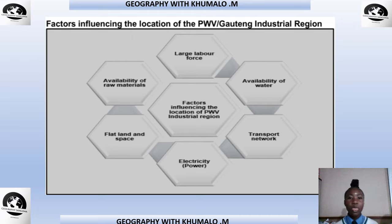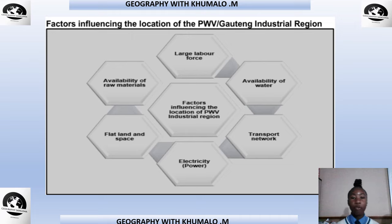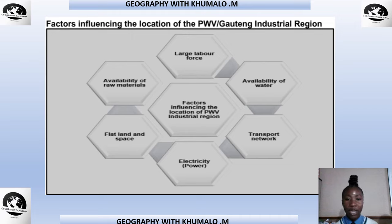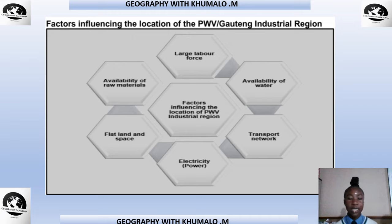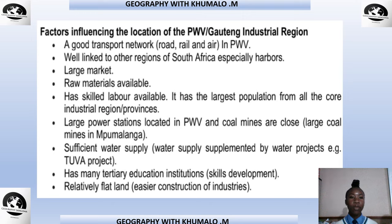The factors influencing the location of the PWV Gauteng industrial region include: the availability of raw materials, flat land and space, electricity, transport network, availability of water, and a large labor force. The number of laborers, water availability, proximity of transport, power supply, available space, and raw materials all determine the productivity of this industrial region.